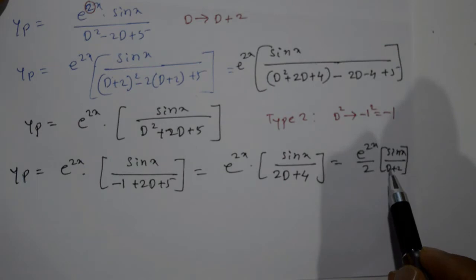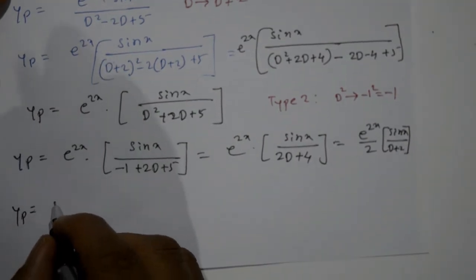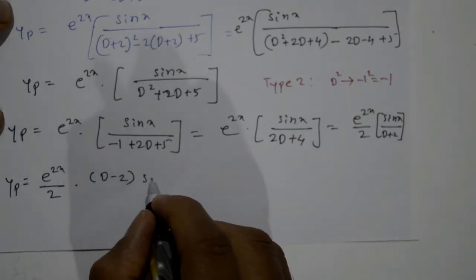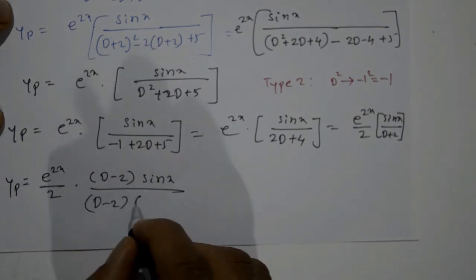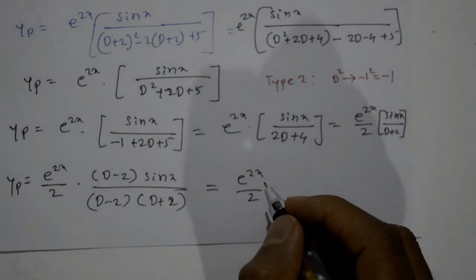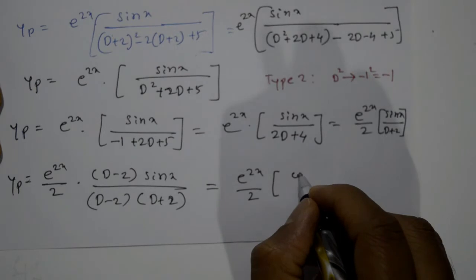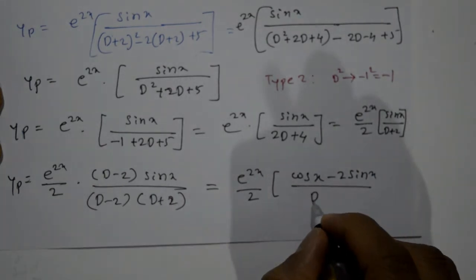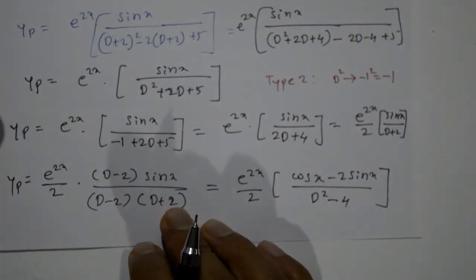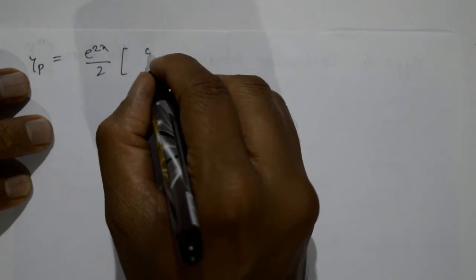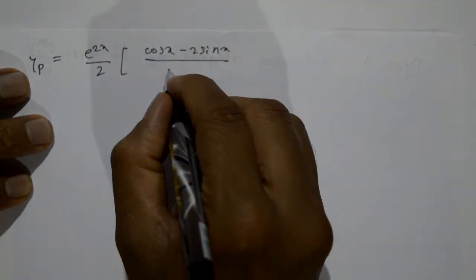Since D still appears, direct substitution is not possible. Multiply and divide by (D - 2) to rationalize: numerator becomes (D-2)·sin x = cos x - 2sin x, and denominator becomes (D+2)(D-2) = D² - 4. So yp = (e^(2x)/2)·(cos x - 2sin x) / (D² - 4).